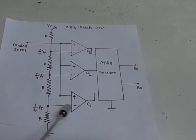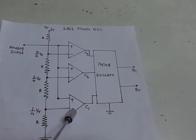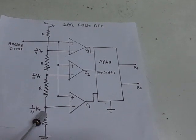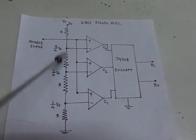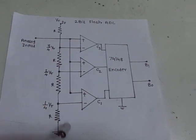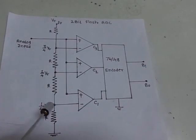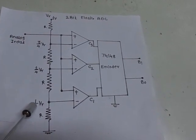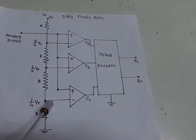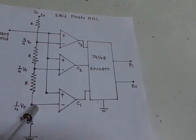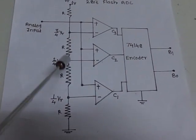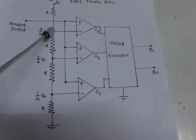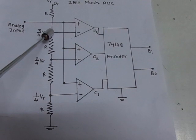At the inverting terminal of comparator 1, the voltage generated is R divided by (R + 3R), that is R over 4R, multiplied by V-reference, which becomes 1/4 of V-reference. So theoretically, with a 1-volt reference, 1/4 of V-reference will become 250 mV. At this point the voltage generated will be 250 mV, and at the next tap point it will be 750 mV.